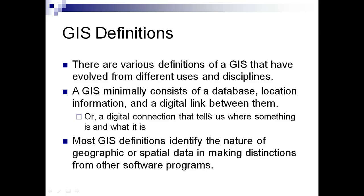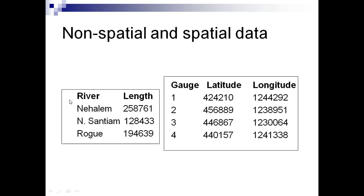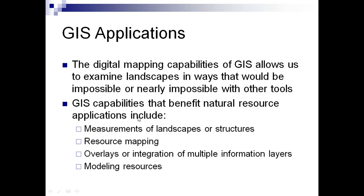Most GIS definitions identify the nature of geographic or spatial data in making distinctions from other software programs. When you are talking about spatial data or geography, you differentiate yourself from all other database software. For example, on the left side there are river names and their lengths — that is non-spatial data. But when you add latitude and longitude, that specifies and converts this into spatial data.